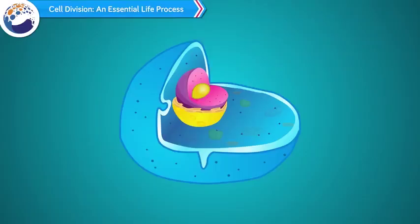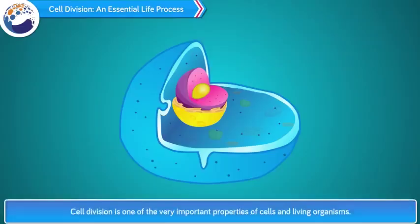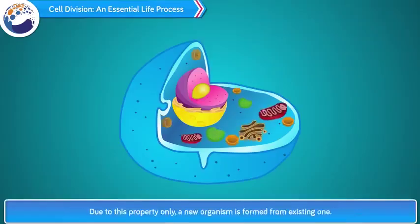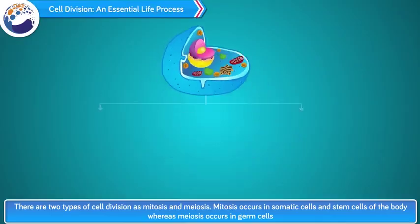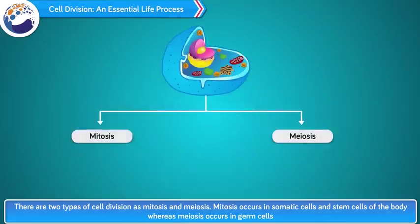Cell division is one of the very important properties of cells and living organisms. Due to this property, a new organism is formed from an existing one, a multicellular organism grows, and an emaciated body can be restored. There are two types of cell division: mitosis and meiosis. Mitosis occurs in somatic cells and stem cells of the body, whereas meiosis occurs in germ cells.